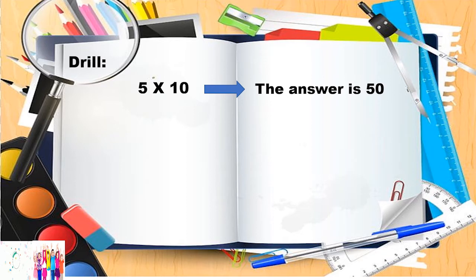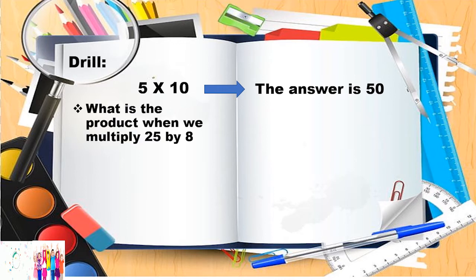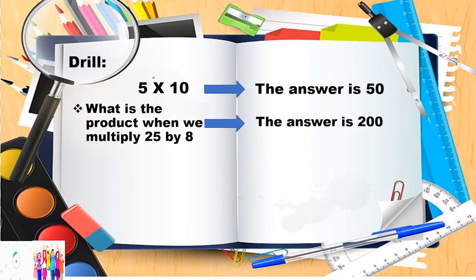Number 2: What is the product when we multiply 25 by 8? Correct! The answer is 200!